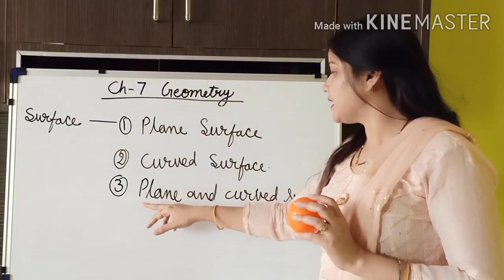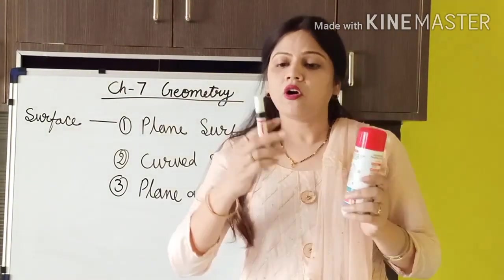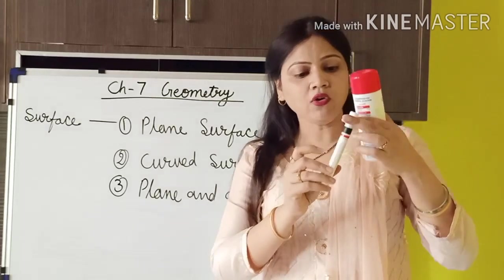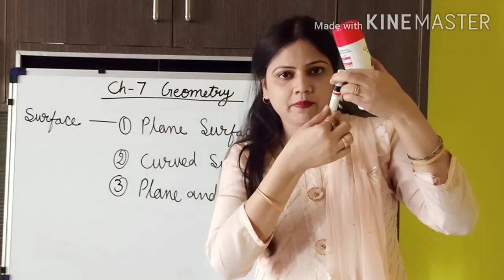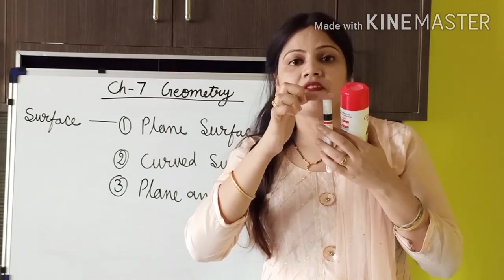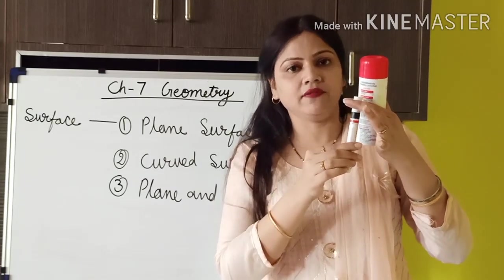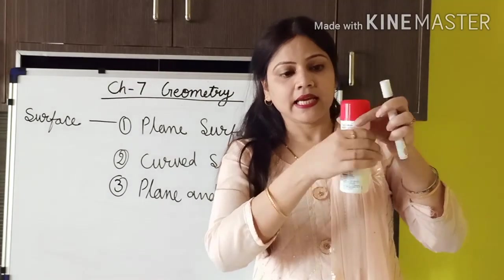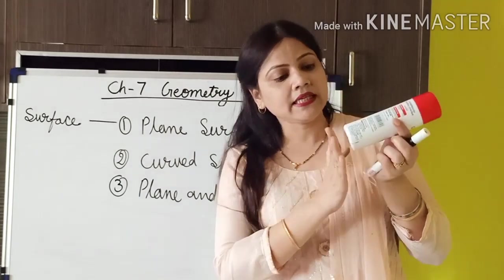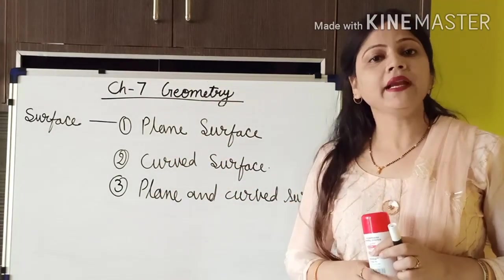The third type of surface is plane and curved surface. Like you can see this — this is a powder container and this is a marker. Both of these are examples of plane and curved surface. This side is curved in shape, but the top and bottom is flat. So the top and bottom is flat surface, while the middle area is curved surface. These three are clear: plane surface, curved surface, and plane and curved surface.